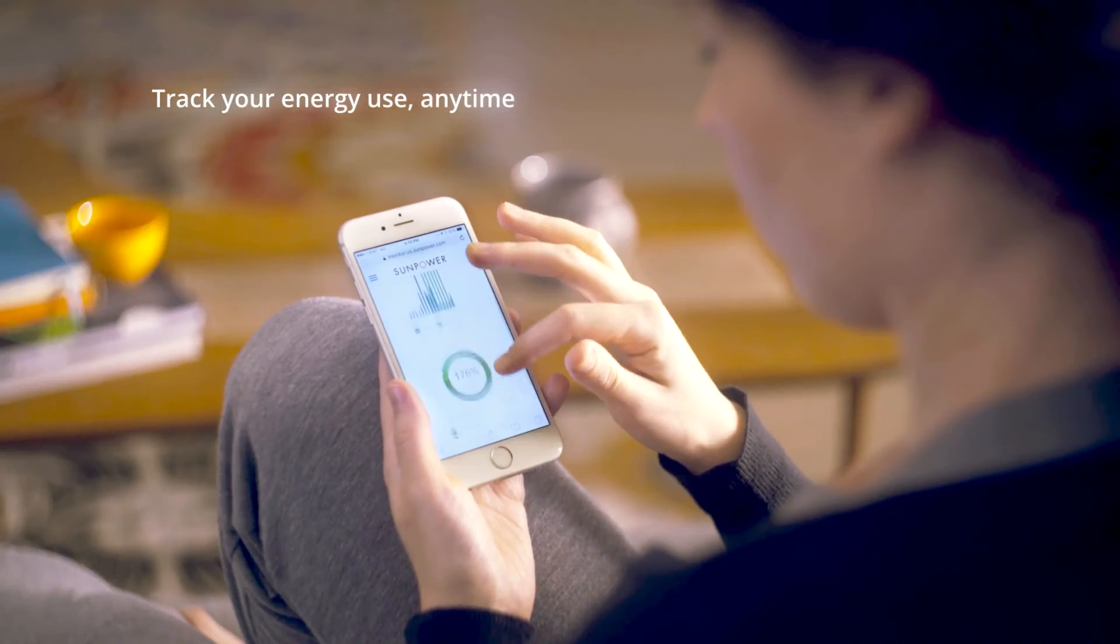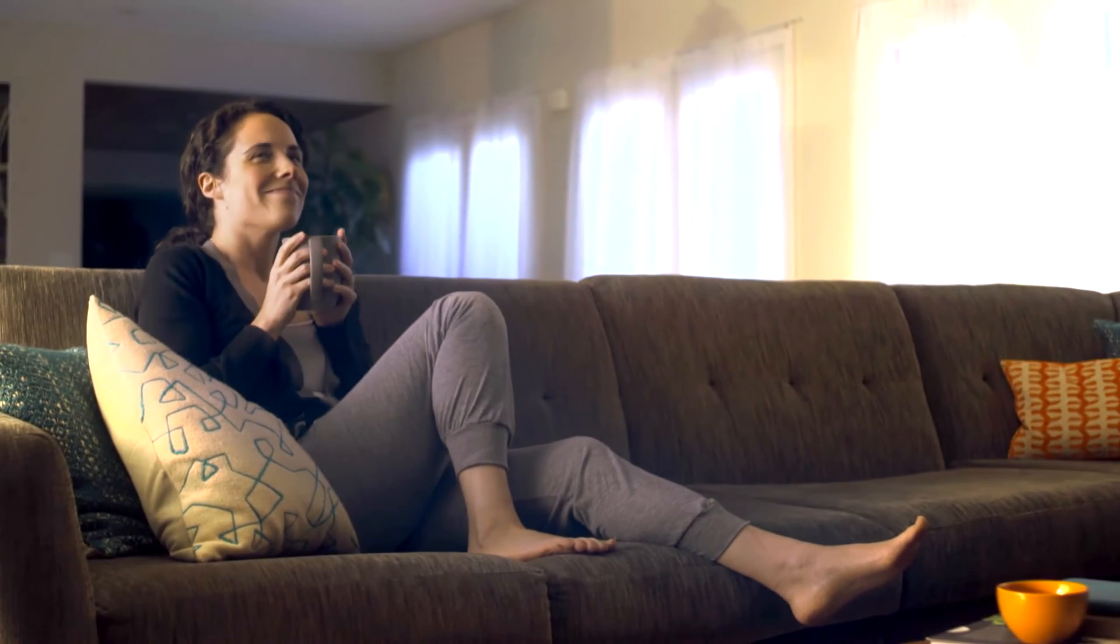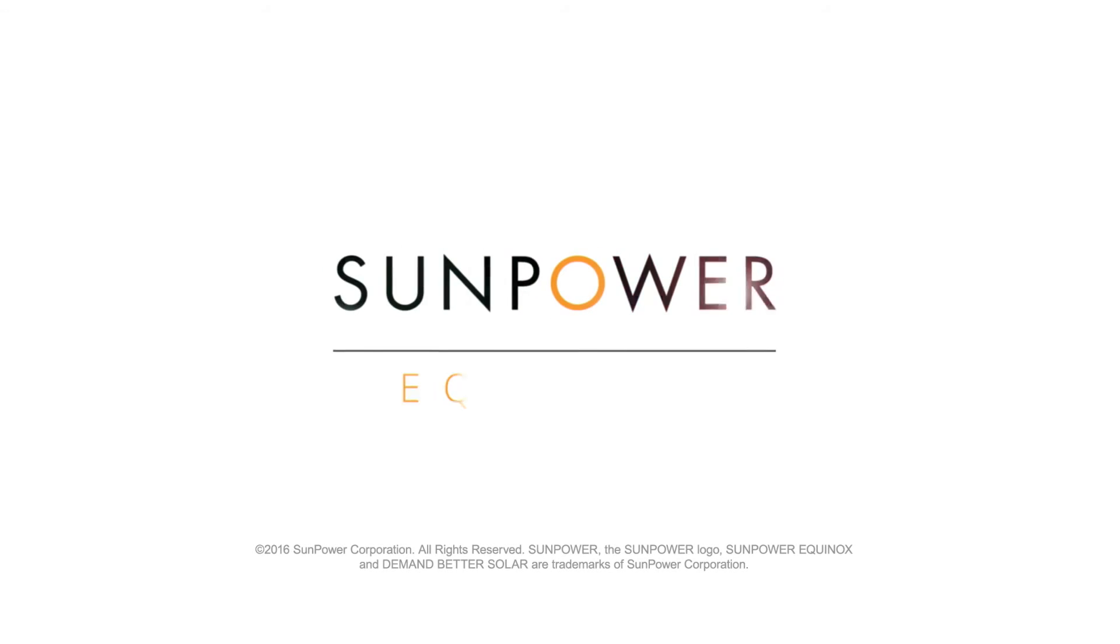It works beautifully overhead and in the palm of your hand. One company, one warranty, one complete home solar system. SunPower Equinox. Demand better solar.